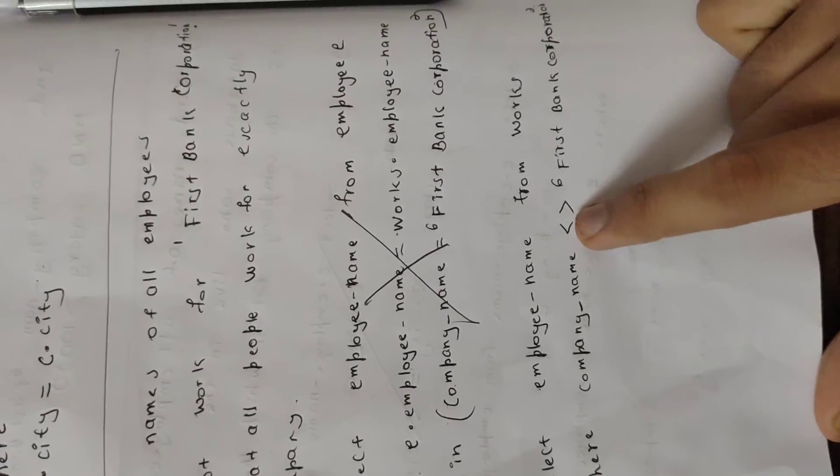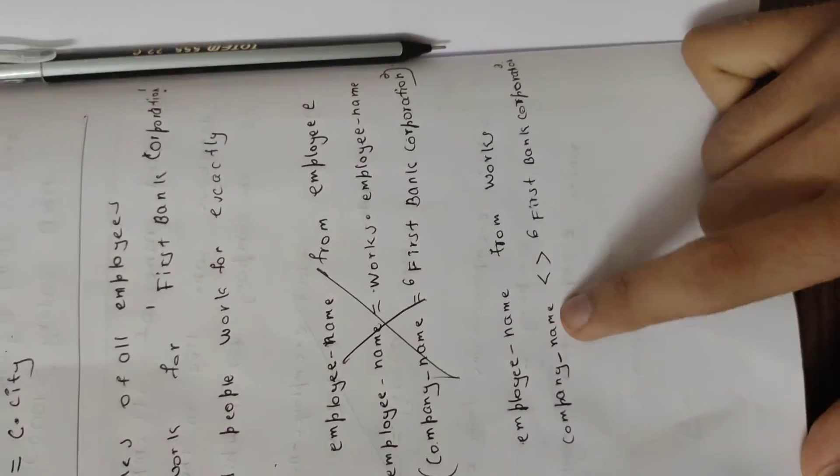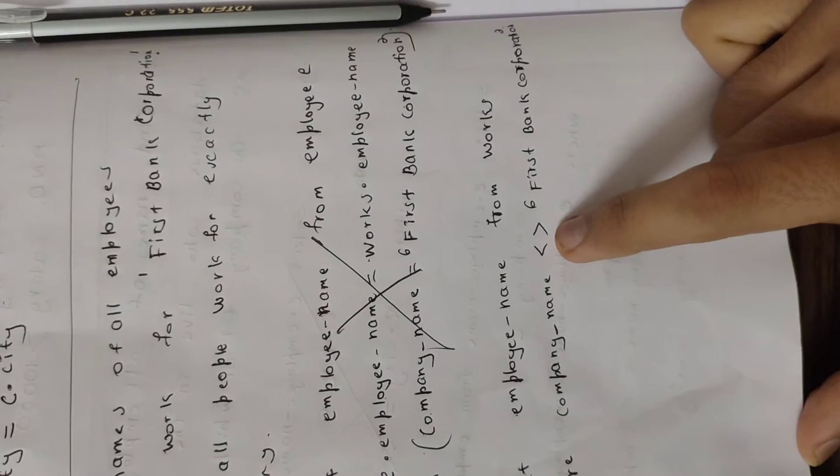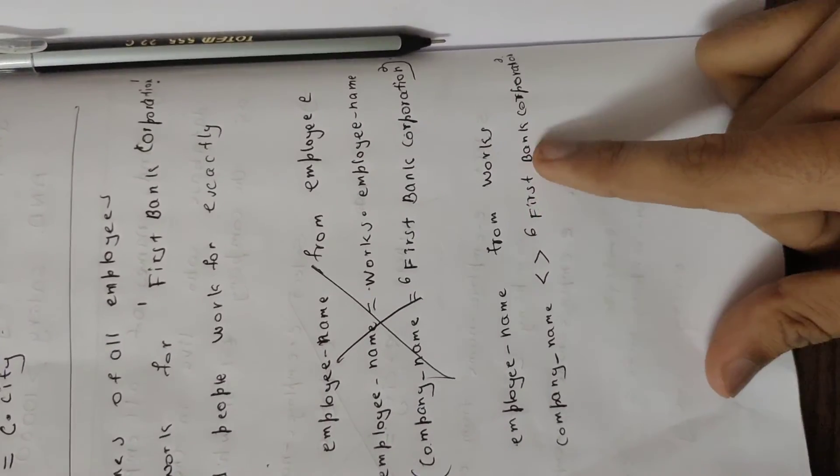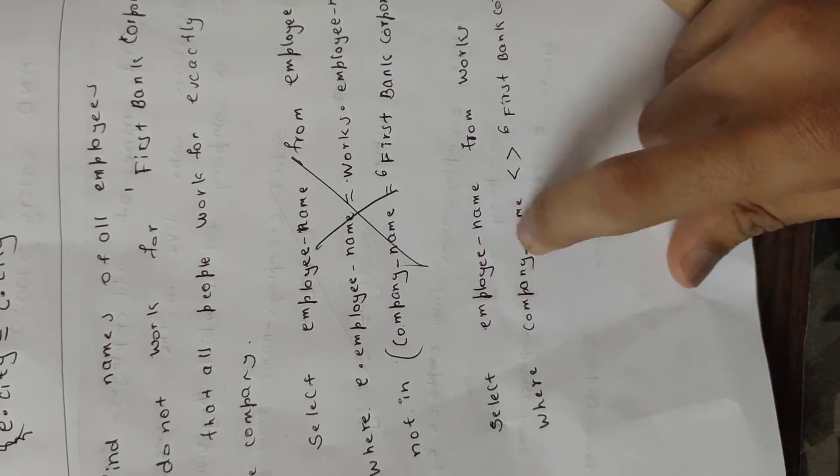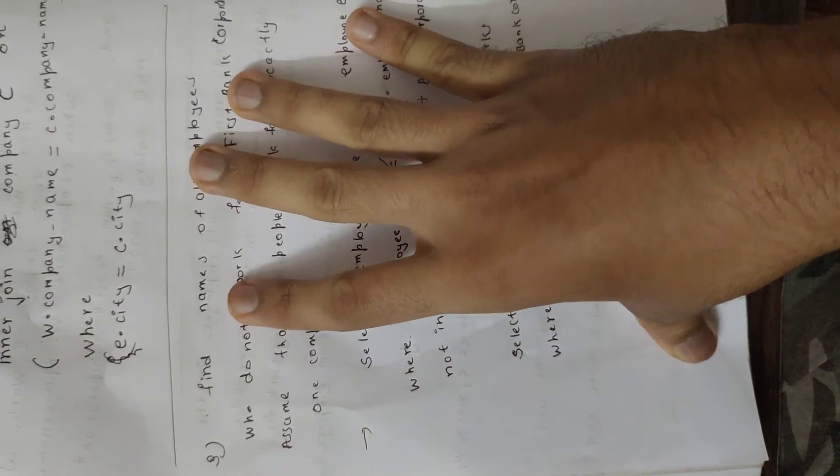Where company name is not equal to First Bank Corporation. This is not equal to company name First Bank Corporation, and display mark back. So it is just a simple query.